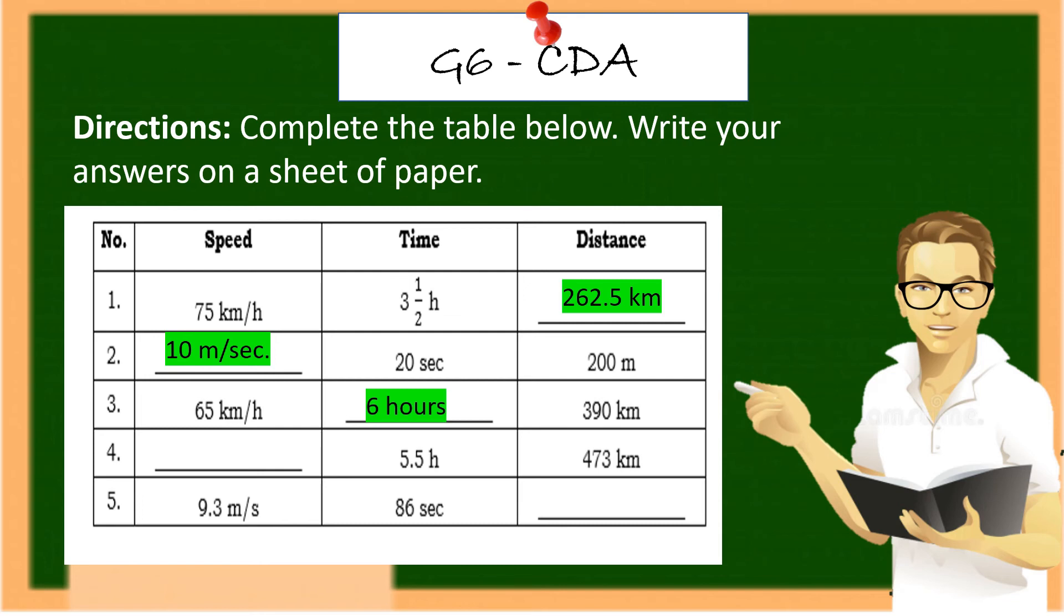Number 4. The given are 5.5 hours and the distance is 473 kilometers. So what is the speed? Correct. 86 kilometers per hour. Number 5. The speed is 9.3 meter per second and the time is 86 seconds. So what is the distance? If your answer is 799.8 meter, you are correct.